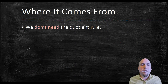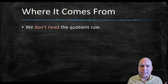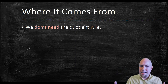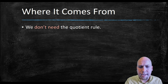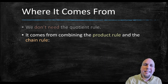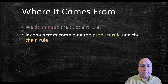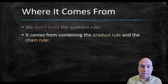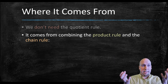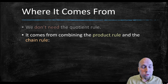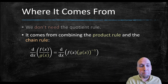So we know how to use the quotient rule, but where does it come from, and why don't we actually need it? What makes it redundant is that it just follows from the product rule and the chain rule, which we've already learned about. So if you're comfortable with the product rule — taking the derivative of a product of two functions — and you're also comfortable with the chain rule — taking the derivative of a function within another function — then you can do the quotient rule without needing to remember it.